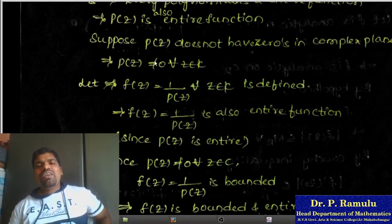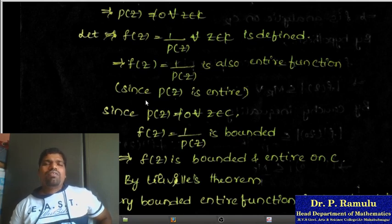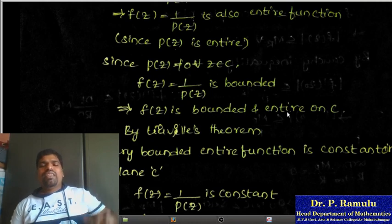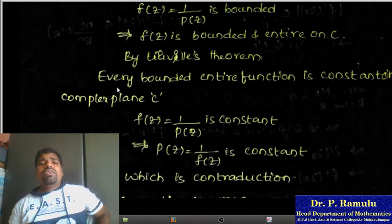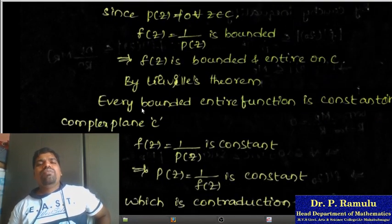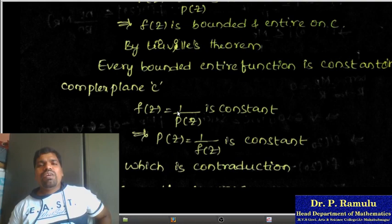Suppose p(z) ≠ 0 for all z in C. Let f(z) = 1/p(z) for all z in C. Since p(z) ≠ 0, f(z) = 1/p(z) is well-defined and also an entire function. Since p(z) ≠ 0, f(z) is bounded. Therefore f(z) is bounded and entire on C.